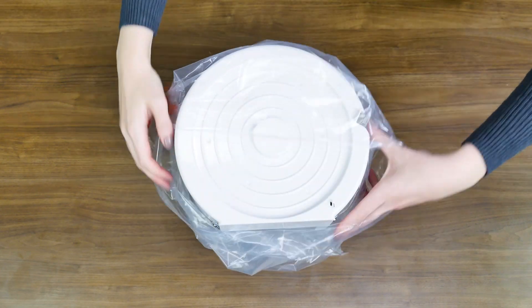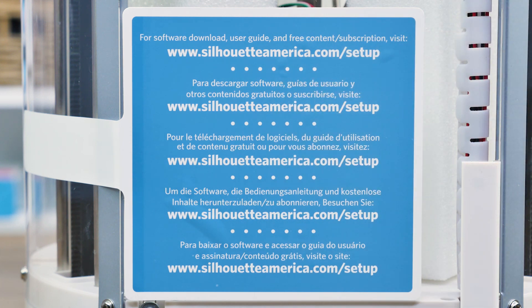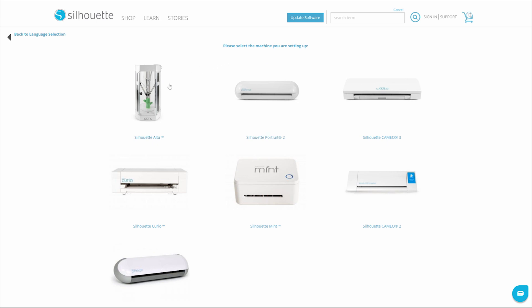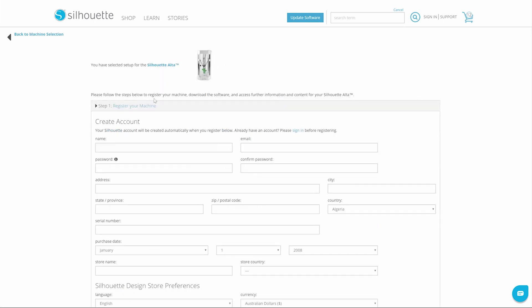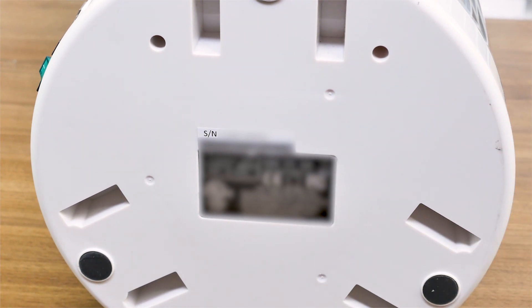Once the Alta is out of the box, you may register your machine at SilhouetteAmerica.com/setup. Completing the registration process will also sign you up for your official Silhouette account. Select your language and the Alta machine, then proceed to fill out all of the needed information. You will find a unique serial number on the bottom of the machine.